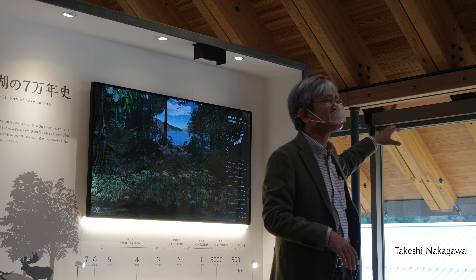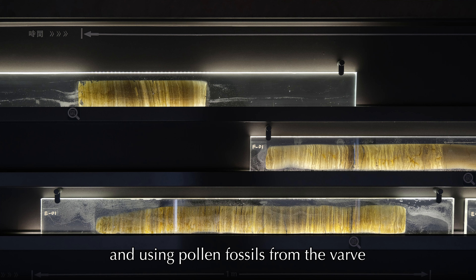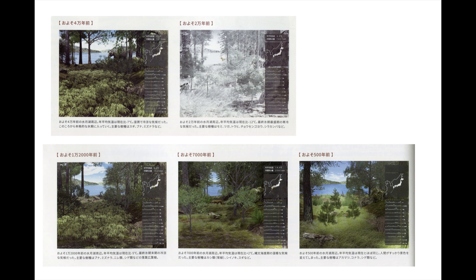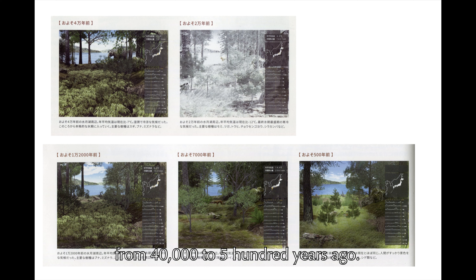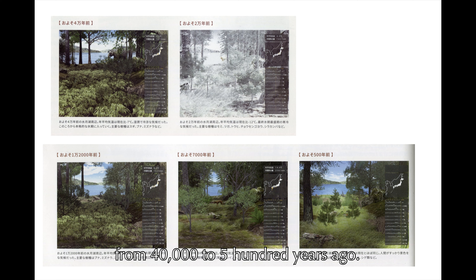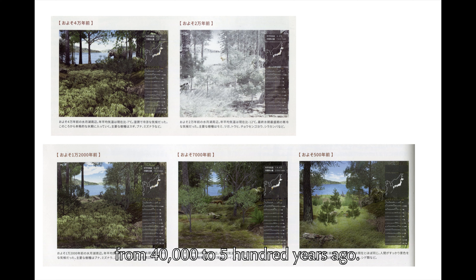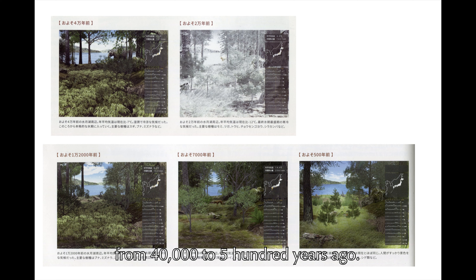When I visited the Varve Museum in Fukui Prefecture, Japan, Professor Nakagawa, who led the varve project team at Lake Suigetsu, said: climate is defined by the landscape. A landscape where not a single tree grows is called a desert, and a climate where not a single tree can grow is called a desert climate. It's all tied to the landscape, he said. They are digging 70,000 years of varves from Lake Suigetsu and using pollen fossils to reconstruct the landscape of that time. They have already drawn the vegetation landscape from 40,000 to 500 years ago.